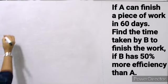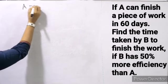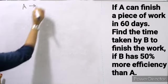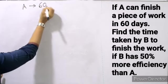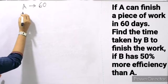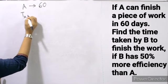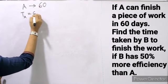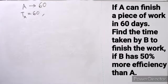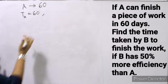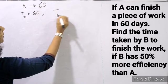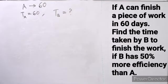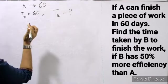If A can finish a piece of work in 60 days, then the time taken by A is 60 days. Find the time taken by B, given that the efficiency of B is 50% more than the efficiency of A.